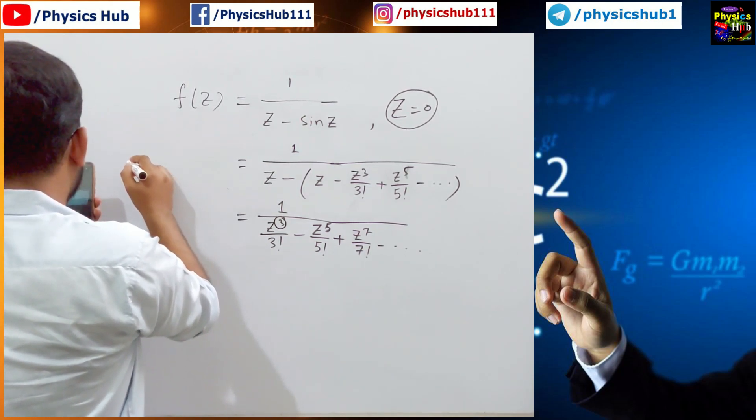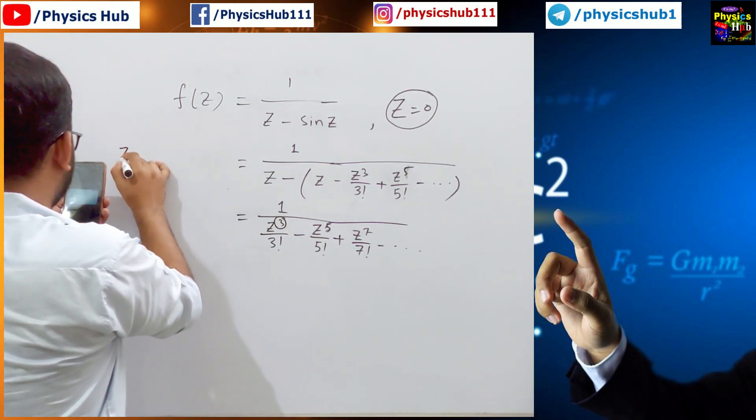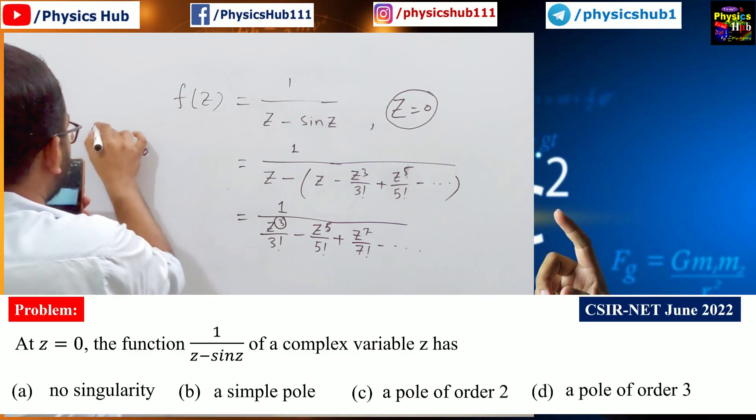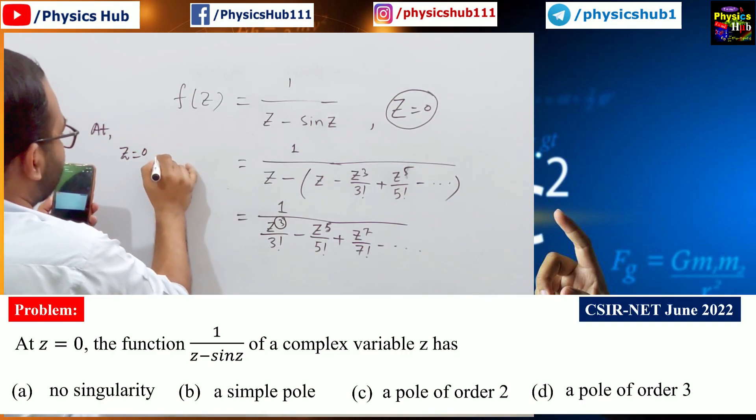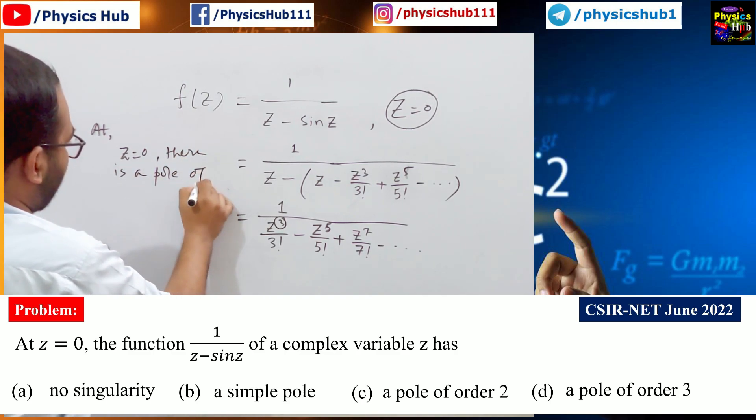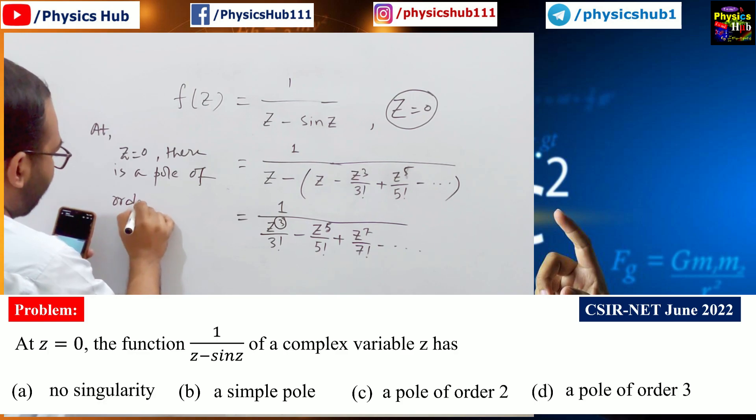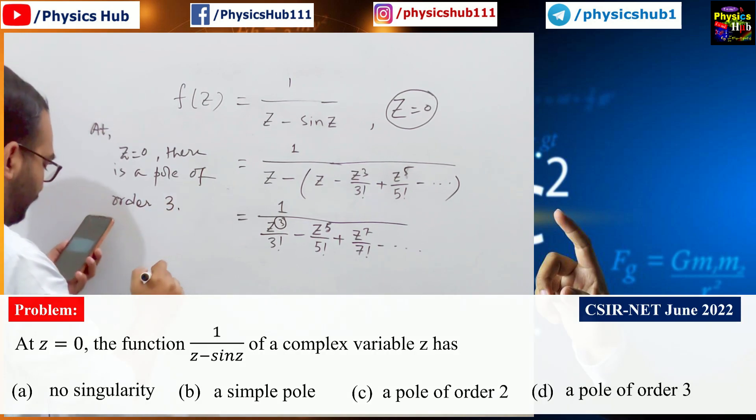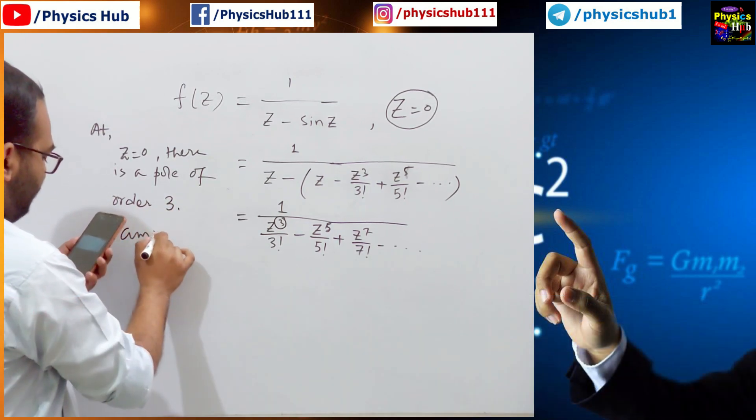So z equals 0 is a pole. At z equals 0, there is a pole of order 3, which is correctly matching with option D.